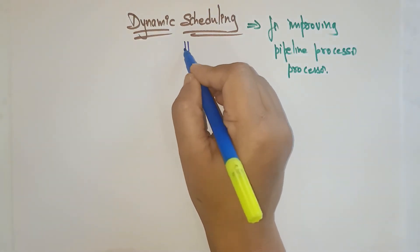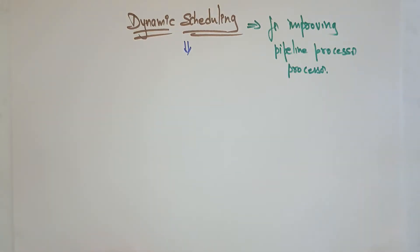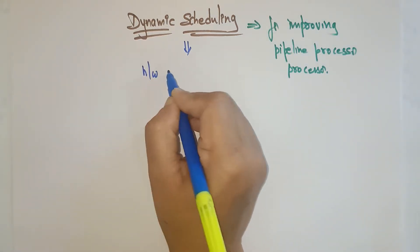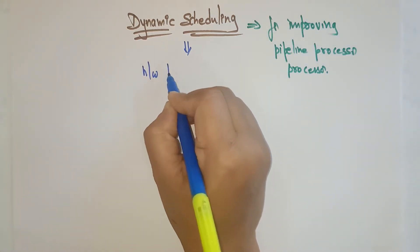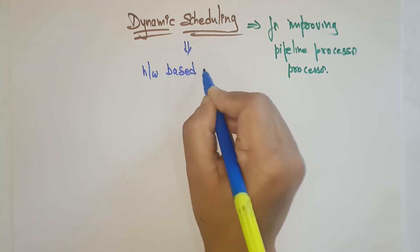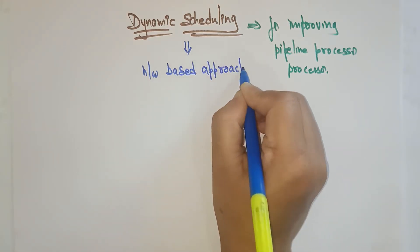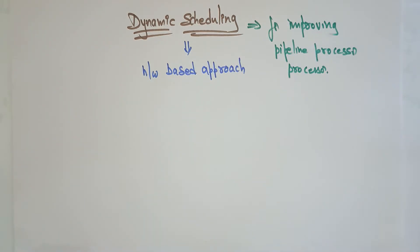Before understanding the different dynamic instruction scheduling techniques, let me give clarity on what exactly dynamic scheduling is. Dynamic scheduling is a hardware-based approach, whereas static scheduling — which I already explained — is a software-based approach, meaning it is a compiler-based approach. Compiler techniques are used for scheduling or rearranging the instructions.